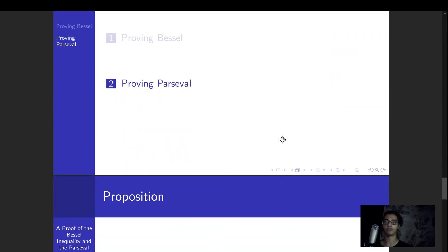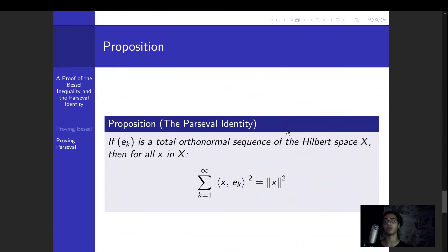And so now, to prove Parseval, we have to assume the context is essentially the same for Bessel, except we assume two more things. The totality of the orthonormal sequence, so our sequence ek is now also total. And the completeness of the space X, so our X is now a Hilbert space.